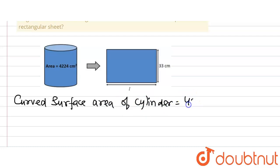And we are also given the width of the rectangle formed after cutting the cylinder. So width of rectangle formed is equal to 33 cm.